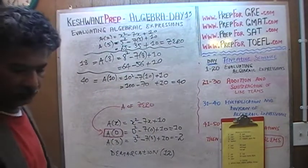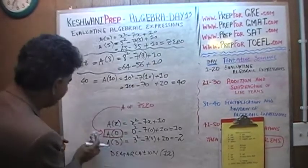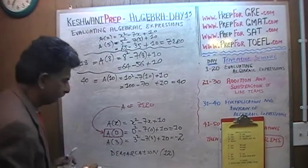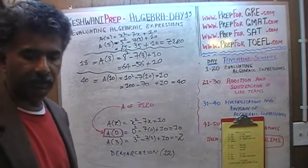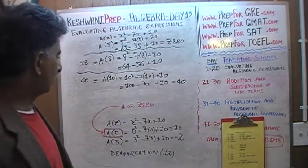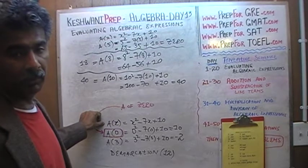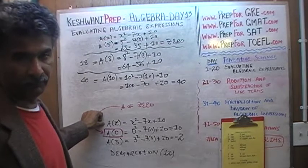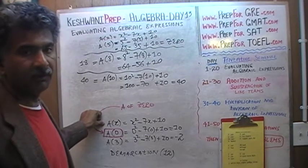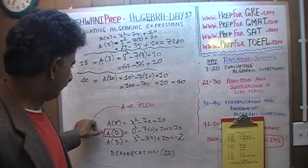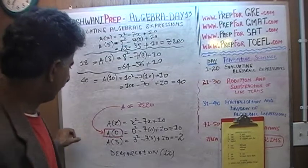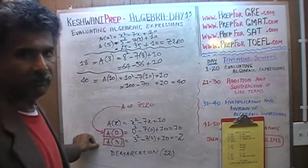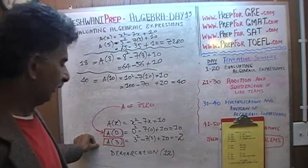This is how you read it: A of 0. It means we were asked to find the value of the expression A when x is 0. Had we called this expression B, we would talk about B of 0. Had we called it alpha, we would talk about alpha of 0. It's just a name we gave to the expression. So we found A(0), and we were asked to find A(3) — meaning the value of the expression A when x is 3.